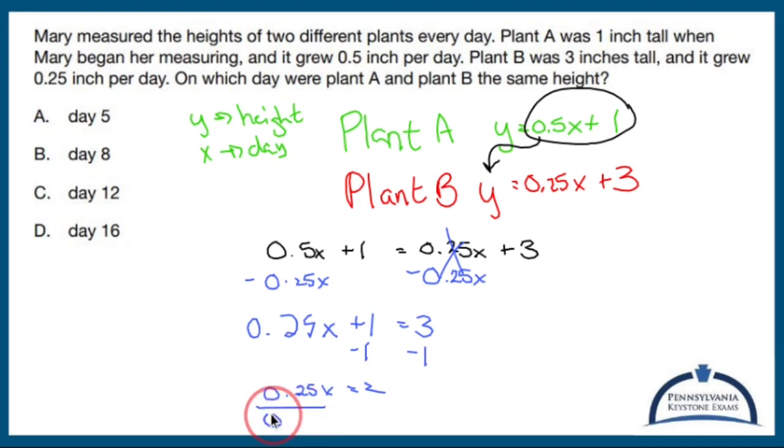Divide both sides by 0.25. So x is going to equal 8. These guys match up on day 8. The answer is B.